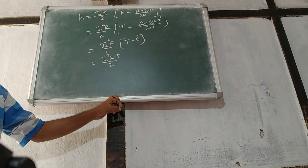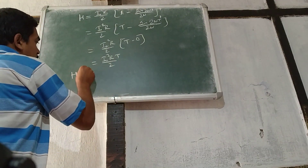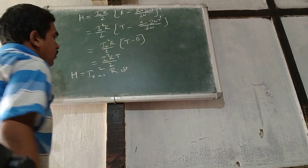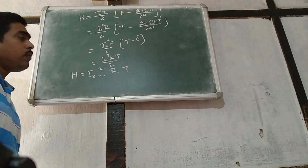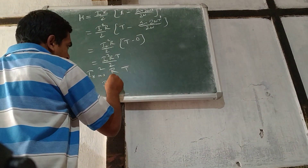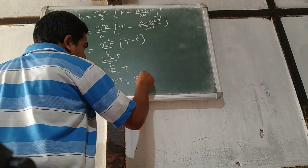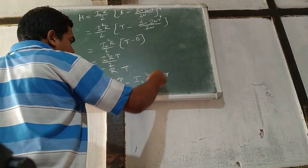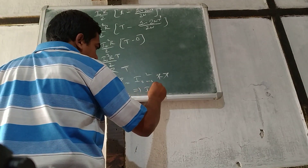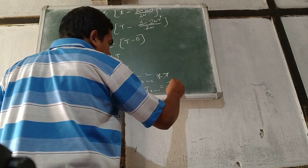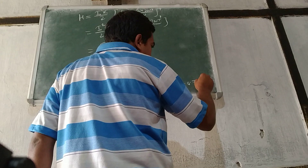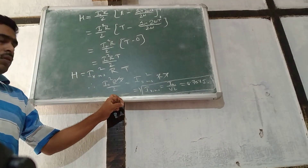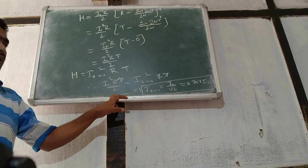Now, suppose for DC we have H equal to I_rms² R T. These two heats will be equal, so I₀² RT by 2 equals I_rms² RT. Cancelling RT, we get I_rms equal to I₀ divided by √2, which equals 0.707 of I₀. So the RMS value of current is 0.707 times I₀.